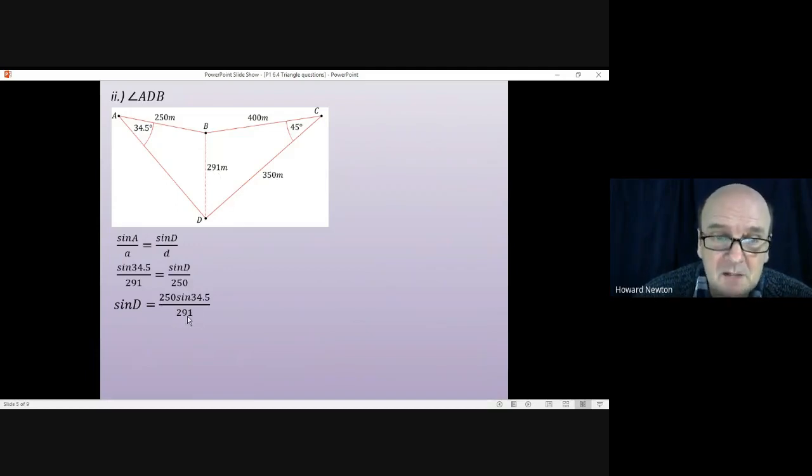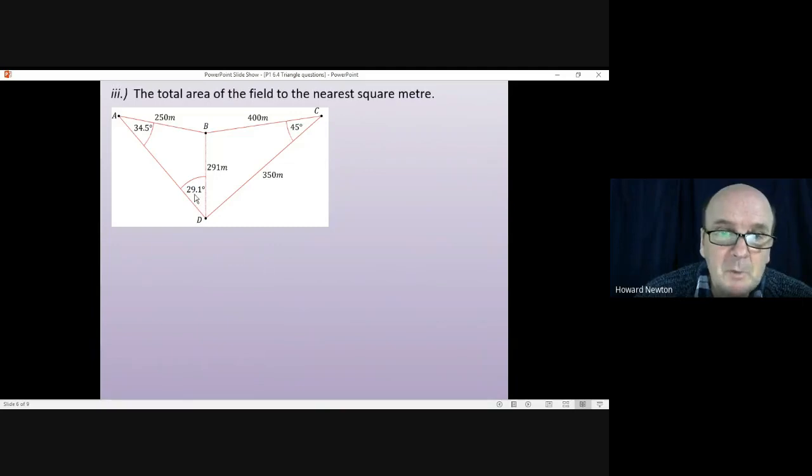Anyway, that should give you sin(D) equals about 0.487, which gives you angle ADB is 29.1 degrees to three significant figures. We can now write in the angle 29.1 degrees. The last thing we're asked to do is find the area of the field.